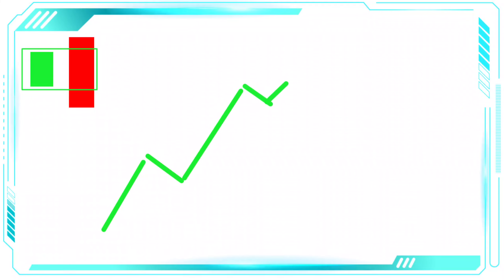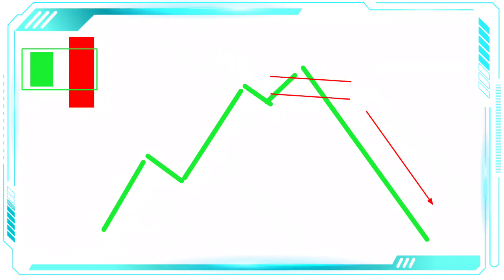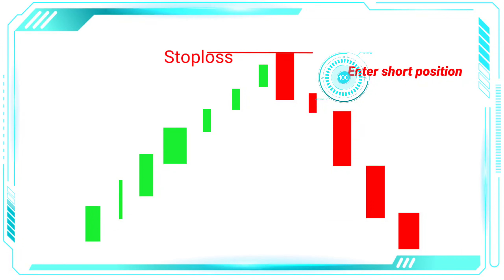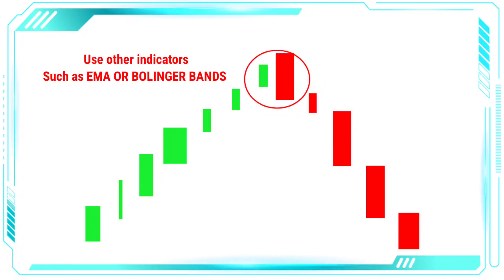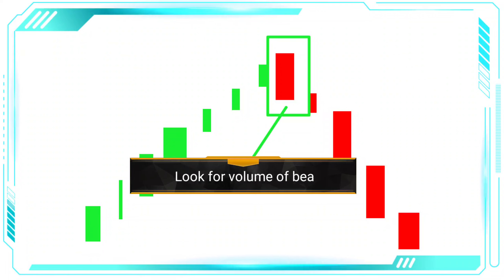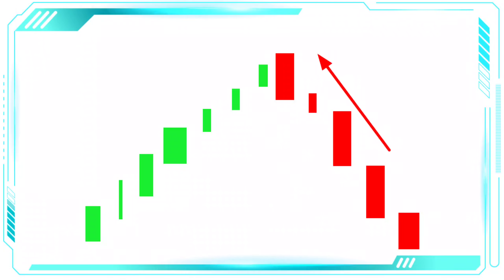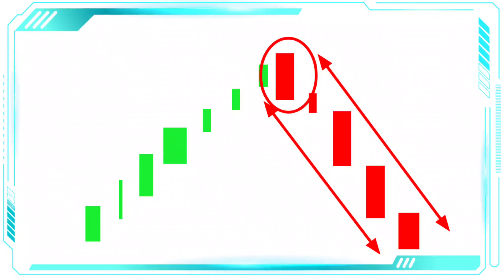The bearish engulfing pattern is a strong indicator of a potential downtrend in the market. It is often used by traders to enter a short position, with a stop loss above the high of the bullish candle. However, it is important to note that the bearish engulfing pattern should always be confirmed with other technical indicators and analysis before making a trading decision. Traders should also pay attention to the volume of the bearish candle, as higher volume indicates stronger bearish pressure and a higher probability of a trend reversal.